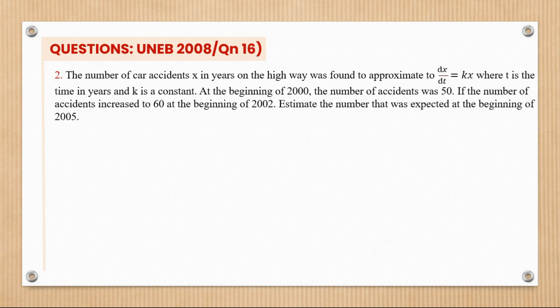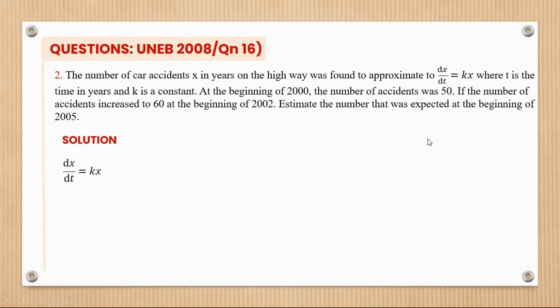The next question is from UNAB 2008, question 16. The number of car accidents in x years on the highway approximates to dx/dt = kx, where t is time in years and k is a constant. At the beginning of 2000 the number of accidents was 50. The differential equation is already given, and since k is positive, there is an increase.